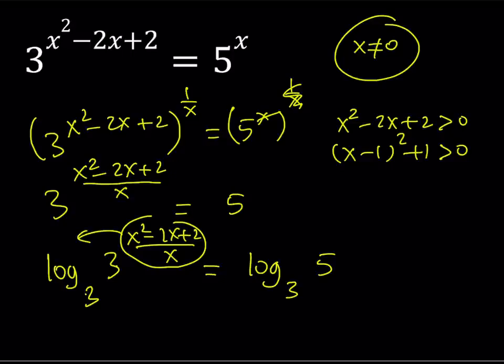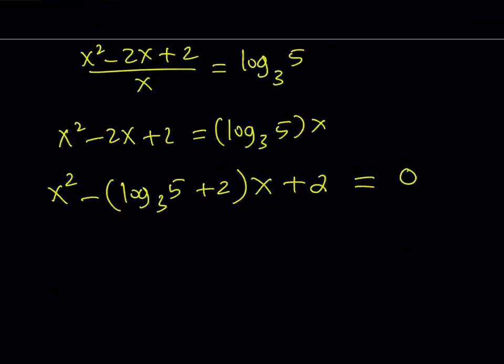That means the expression on the left hand side is always greater than 1, which means 5 to the power x is also greater than 1, which means that x must be positive. So our x values have to be positive. Let's just take note on that one. When we solve this equation, we have to make sure that all the solutions are greater than 0.